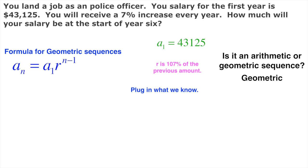Now we also know the ratio. The ratio is 7% higher than this one. If this was 100%, this one would be 107%. It's actually 107% of the previous amount. So we write that in decimal form as 1.07. The ratio is 1.07.